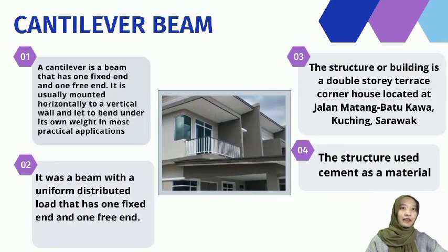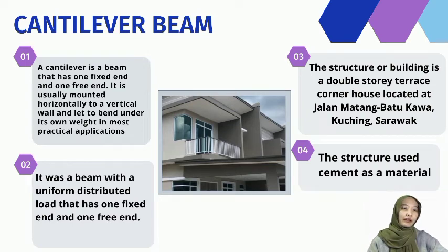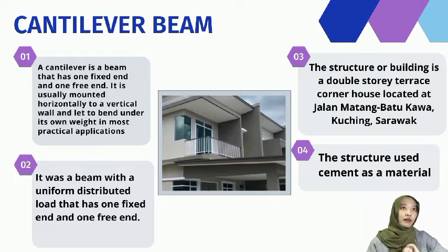The second structure is a cantilever beam. A cantilever is a beam that has one fixed end and one free end, usually mounted horizontally to a vertical wall, designed to bend under its own weight. In this project, it is a beam with a uniform distributed load. The structure is a double-storey terrace corner house located at Jalan Matang Batu Kawa, Pending, Sarawak.